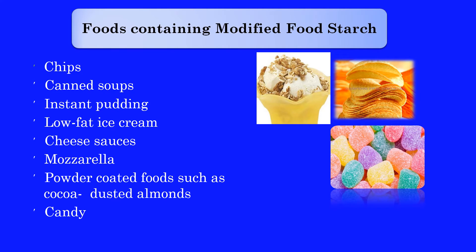Before we go into the detailed techniques, let's look at the foods containing modified food starch. Commonly these include chips, canned soups, instant pudding, low-fat ice cream, sauces, and powder-coated foods such as cocoa-dusted almonds and candies. You can see there is a wide variety of food applications which use modified starch to perform optimal functional attributes.